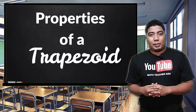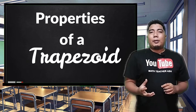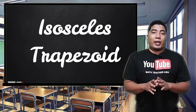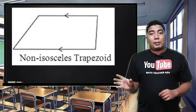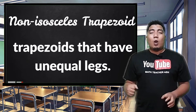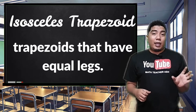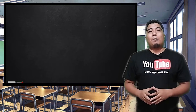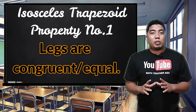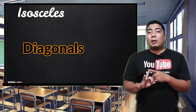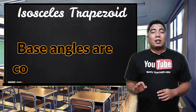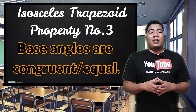Now let us go to the properties of a trapezoid. Trapezoids can be divided into two groups. The first one is the non-isosceles trapezoid, and the second one is the isosceles trapezoid. The non-isosceles trapezoid has legs that are not equal, while the isosceles trapezoid has legs that are equal. If you have an isosceles trapezoid, you will have three different properties: legs are equal, diagonals are equal or congruent, and base angles of an isosceles trapezoid are equal.